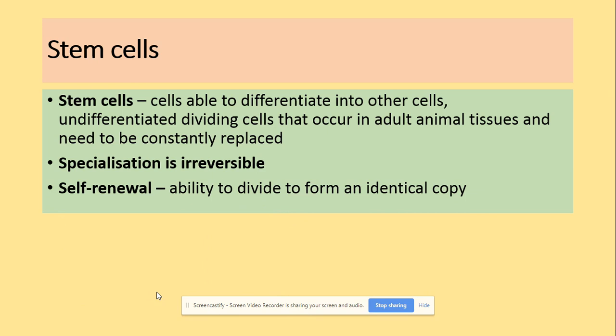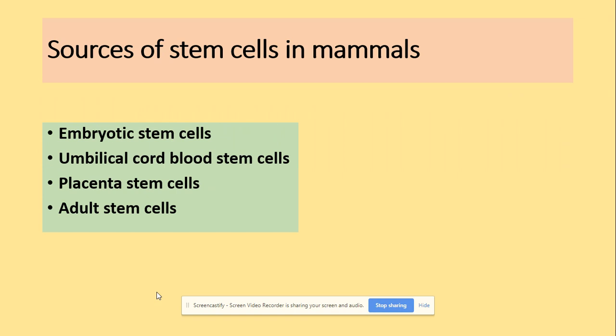In terms of self-renewal, it is the ability to divide to form an identical copy — this terminology is needed. The sources of stem cells include embryonic stem cells, umbilical cord blood stem cells, placenta stem cells, and adult stem cells.